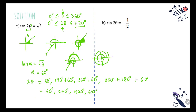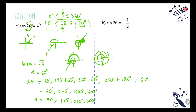Remember, these are the answers for 2θ. We are trying to find θ, so we divide each angle by 2. The final answers are θ = 30°, 120°, 210°, and 300°. The key difference from previous questions is that when the angle changes (e.g., 2θ instead of θ), we must change the range and answer according to the new range.